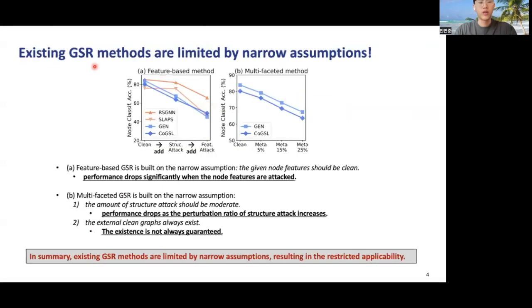However, we argue that existing GSR methods are limited by narrow assumptions. Feature-based GSR methods are built on the narrow assumption that the given node features should be clean. However, we observed that when the node features are attacked or noisy, their performance drops significantly, as shown in Figure A.